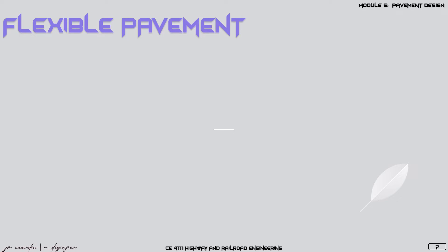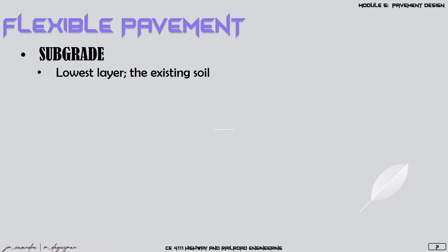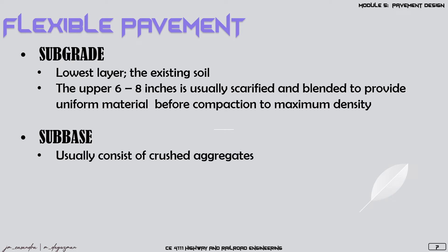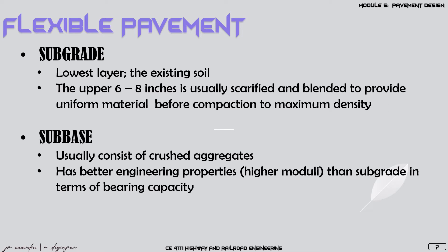For the different layers of a flexible pavement, the first layer is the subgrade — the existing soil on which we lay out the roadway. The upper 6 to 8 inches will be scarified, meaning scraped to remove debris on the surface and blend the material to provide uniformity before compaction to achieve maximum density. The next layer is the sub-base, which usually consists of crushed aggregates with better engineering properties and higher bearing capacity compared to the subgrade.